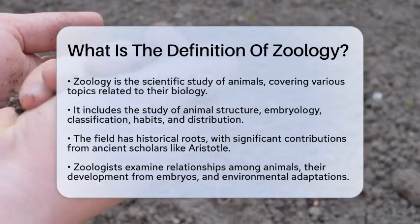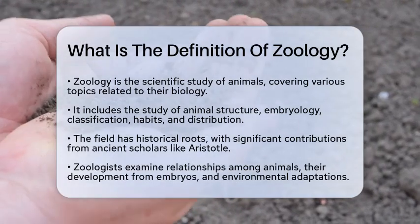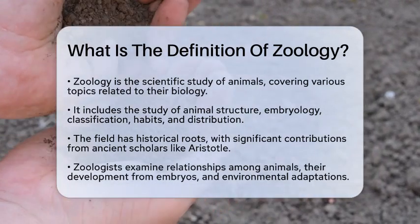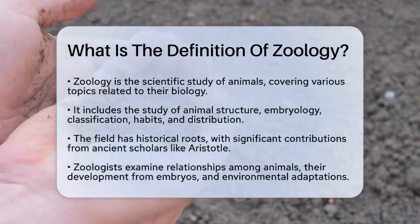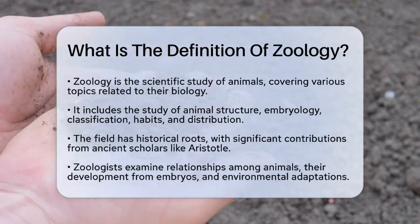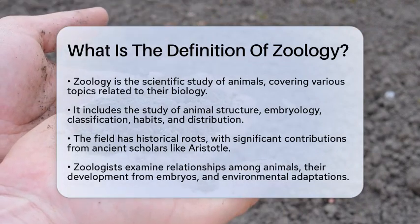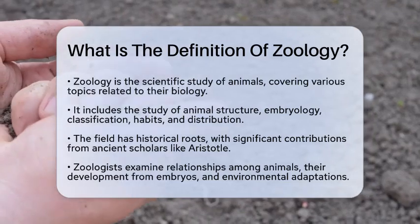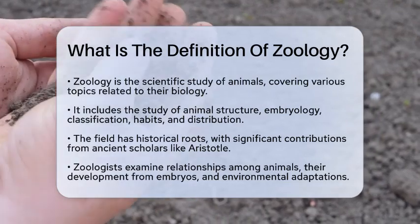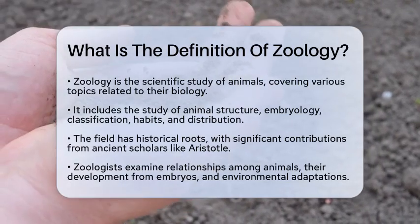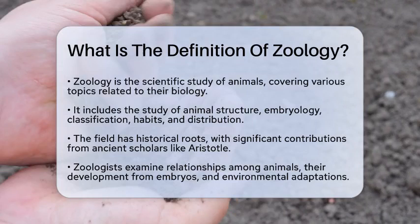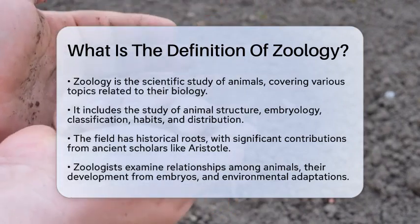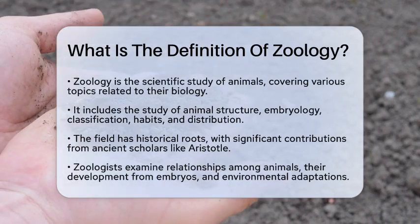Zoology is the scientific study of animals. It encompasses a wide range of topics, including the structure, embryology, classification, habits, and distribution of all animals, both living and extinct. This field is one of the primary branches of biology and has its roots in ancient times, with notable contributions from Aristotle.